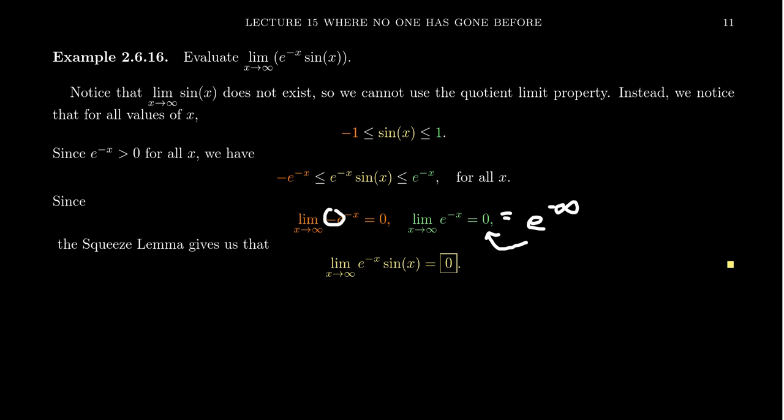well, the negative sign in front can actually come outside, in which case you're going to get negative zero, which is the same thing as zero, of course, in this situation. So the limit on the right goes to zero. The limit on the left goes to zero. And since e to the negative x times sine of x is squeezed between them, its limit will also be zero.